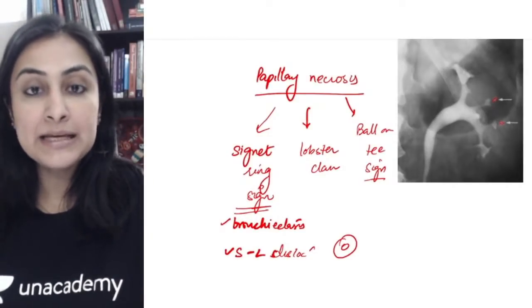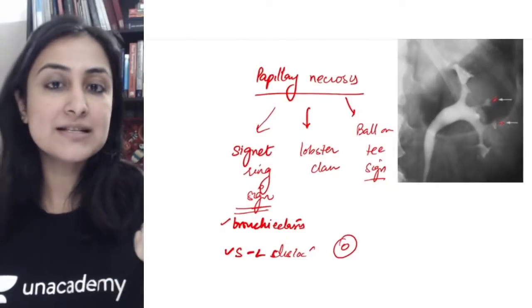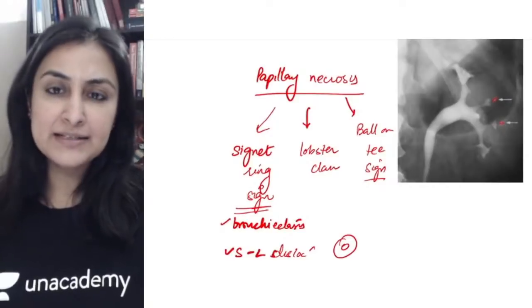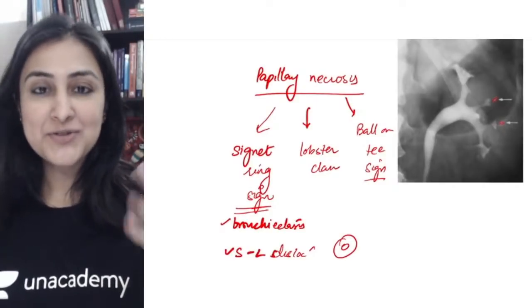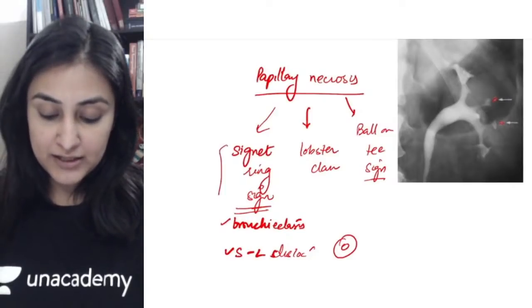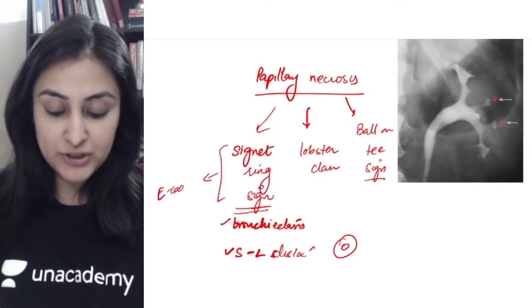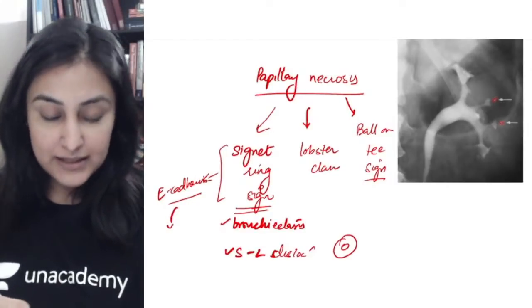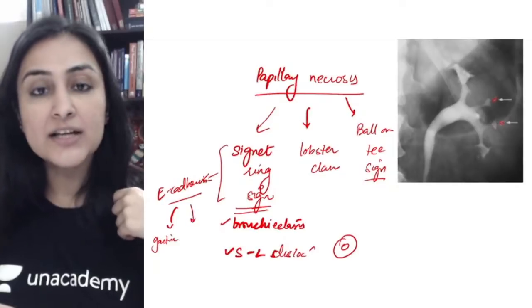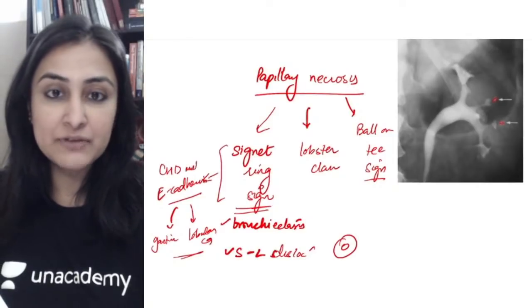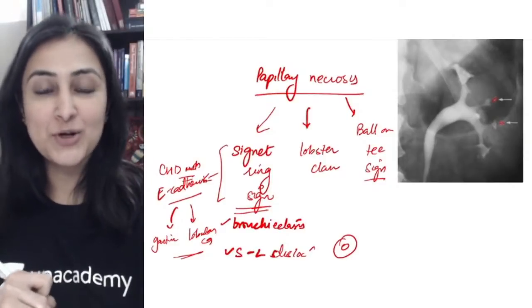Causes of papillary necrosis include diabetes, TB, NSAIDs/analgesic nephropathy, and sickle cell anemia. In pathology, signet ring morphology with E-cadherin/CDH1 mutation is seen in gastric malignancy and lobular carcinoma of the breast — both associated with CDH1 mutation on chromosome 11.